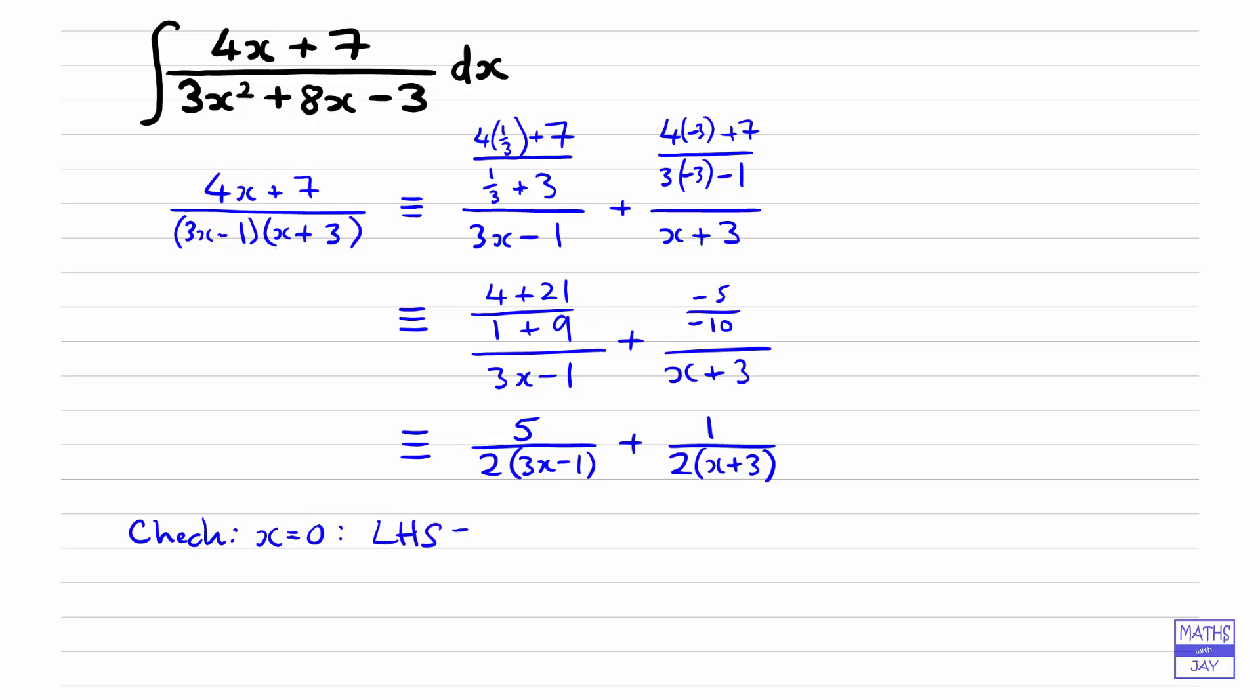So let's just write this down, so if we're checking x equals 0, first of all the original fraction, so the left hand side, if we put x is 0 throughout there, we get 7 in the numerator, and then we get minus 1 times 3, so minus 3. And then the new replacement fraction, so that single fraction, let's put in x is 0 there, so we get 5 over 2 times negative 1, so minus 2, and then the other one will be plus 1 over 6, and luckily that does work out to be minus 7 over 3, so not a proof that the answer's correct, but it's a good sign.